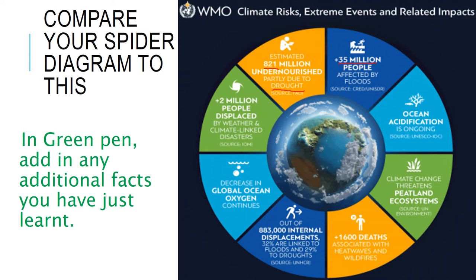35 million people affected by flooding. Some of those people were in this country earlier on this academic year, particularly further up north, and that created lots of damage. It stopped people from going to work, stopped people from being able to see each other, and obviously destroyed a lot of people's houses as well.